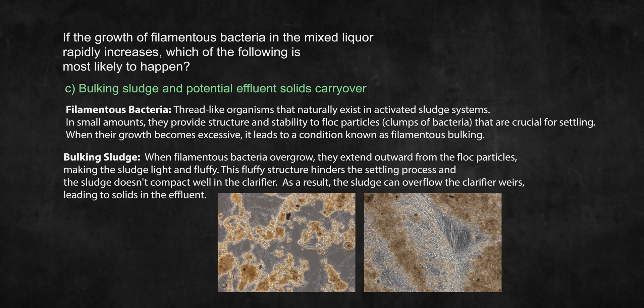The filamentous bacteria will extend outward from the flock, creating a bridging effect between flock particles. This gives the sludge an appearance that can be described as light and fluffy. If the filamentous growth goes unchecked, it can lead to sludge billowing over the weirs of a clarifier, leading to solids in the effluent. Some common countermeasures include increasing wasting, increasing dissolved oxygen within the aeration basin, and continuously dosing the return-activated sludge with chlorine.